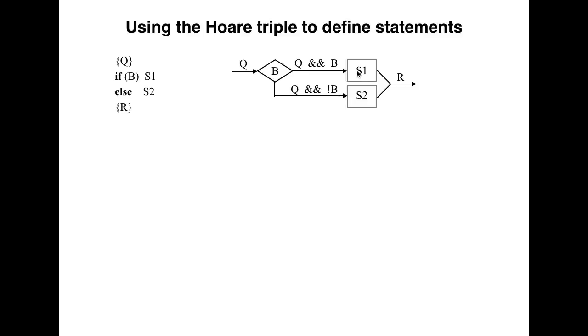Evidently, we have to show that executing s1 with q and b true terminates with r true, and similarly for the case when b is false. Thus, from this flow chart, we can write down the Hoare triple for if-else.